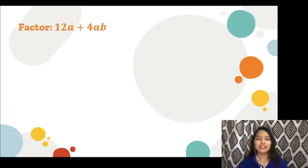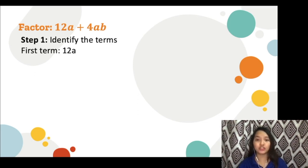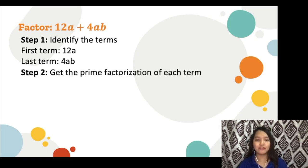Now let's apply the same concept in factoring this given polynomial. Specifically, what type of polynomial is this? It is a binomial — you have 2 terms here. Step 1: Identify the terms. The first term is 12a, while the second term is 4ab. We have to get the prime factorization of each term for step 2.